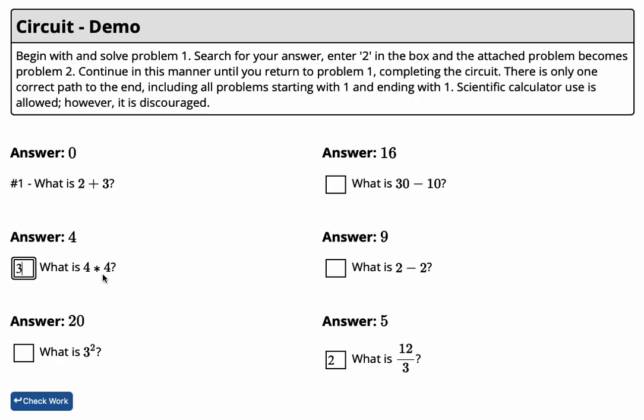Similarly, what is 4 times 4? Well, that's 16, so we look for the answer, and that question becomes problem 4. 30 minus 10 is obviously 20, so that becomes question 5, because the answer here is 20.